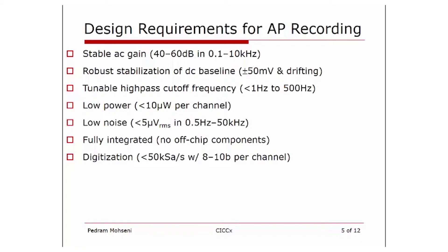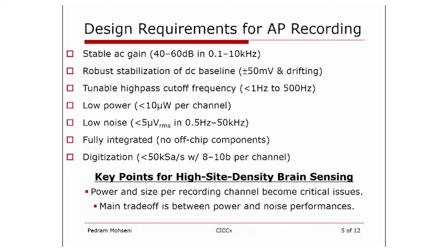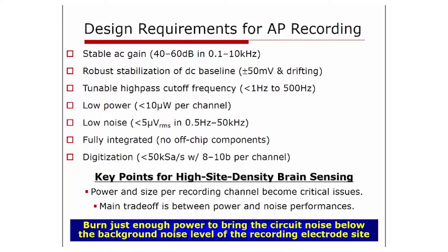The current trend in brain sensing is toward high-site-density recording where you may want to simultaneously record from hundreds if not thousands of channels. Power and size per recording channel become critical issues in high-site-density recording. Given the higher-frequency nature of action potentials, your front-end design will typically be limited to thermal noise, creating a trade-off between power and noise performance — burning more power brings the noise level down. A good rule of thumb is to burn just enough power to bring your circuit noise below the background noise level of the recording site, which is typically about 10 microvolts RMS depending on the area of the site.